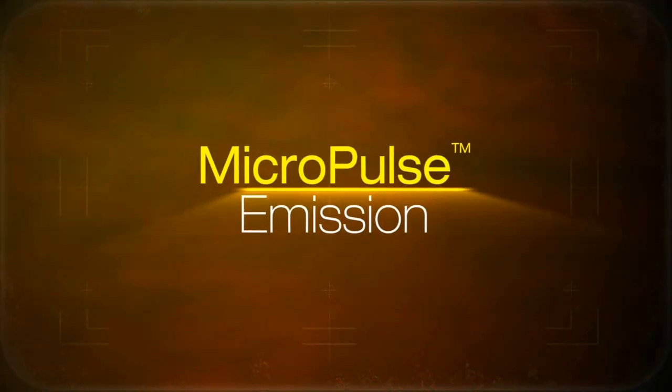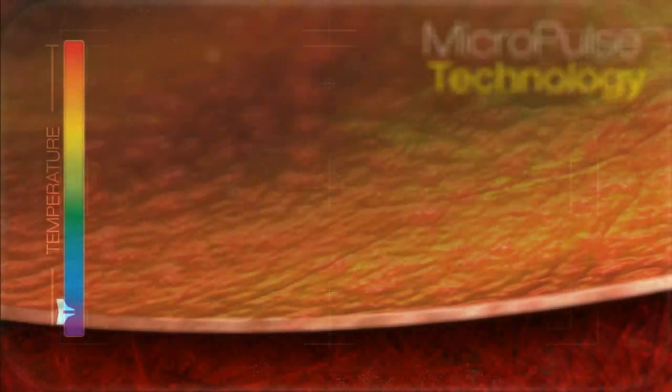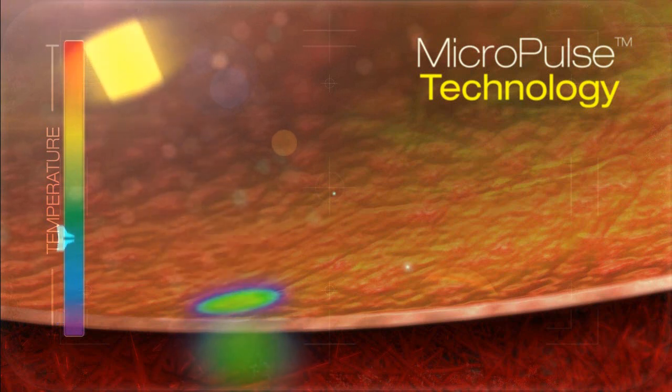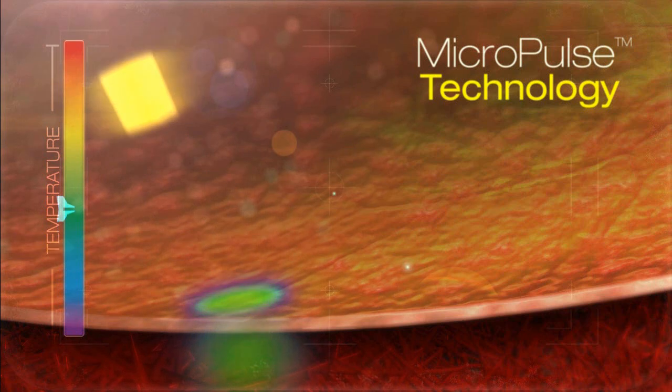Micropulse is a tissue-sparing technology which offers fine control of laser output and thus the thermal effects to target tissue. This is done by chopping the laser output to a sequence of short on and off intervals.